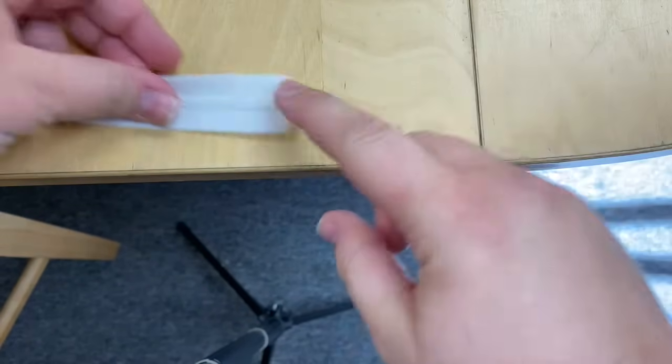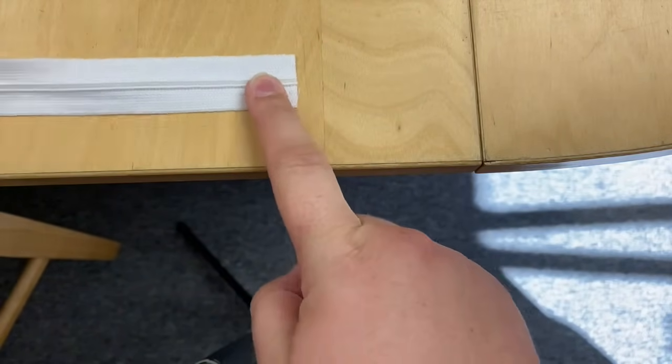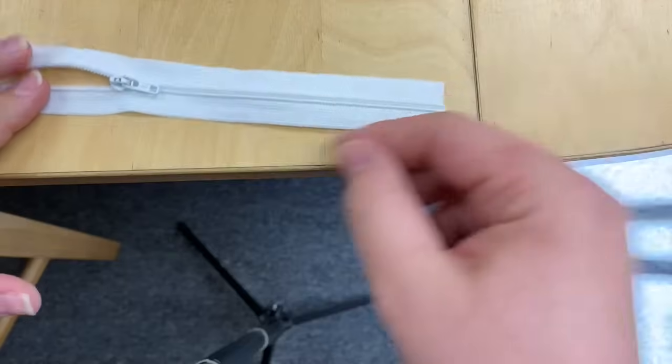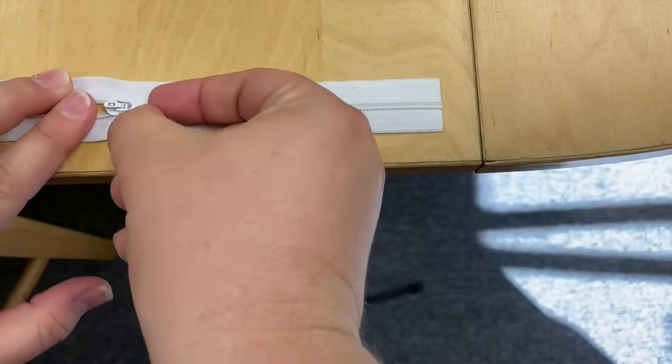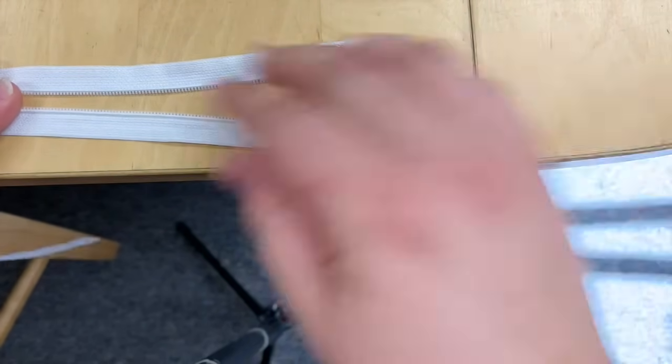To reinstall a zipper head, let's say you cut off the zipper stop on your zipper, and then you open up your zipper and accidentally unzip it all the way. The zipper head comes off the end. What are we going to do? How do we put it back on?